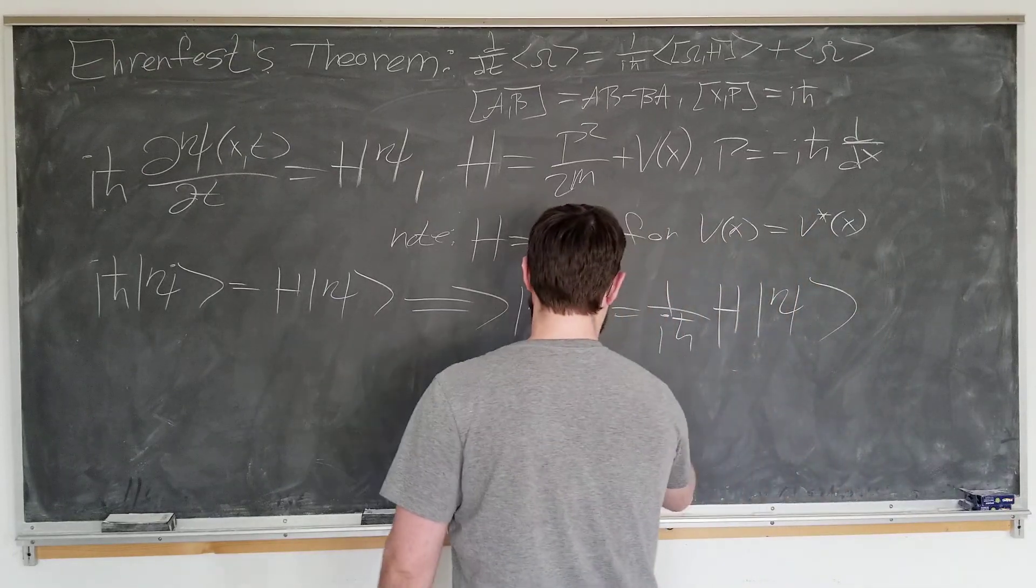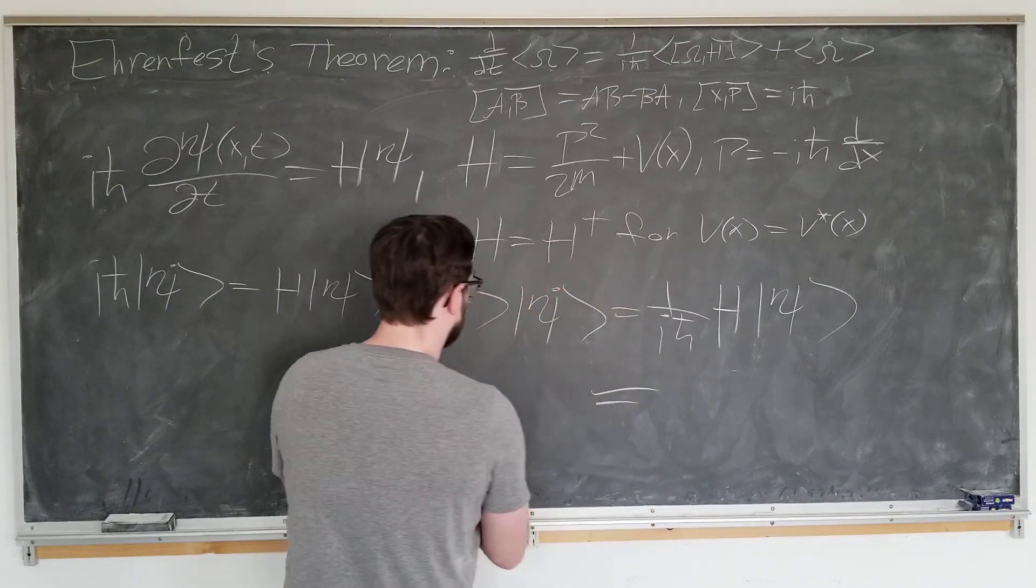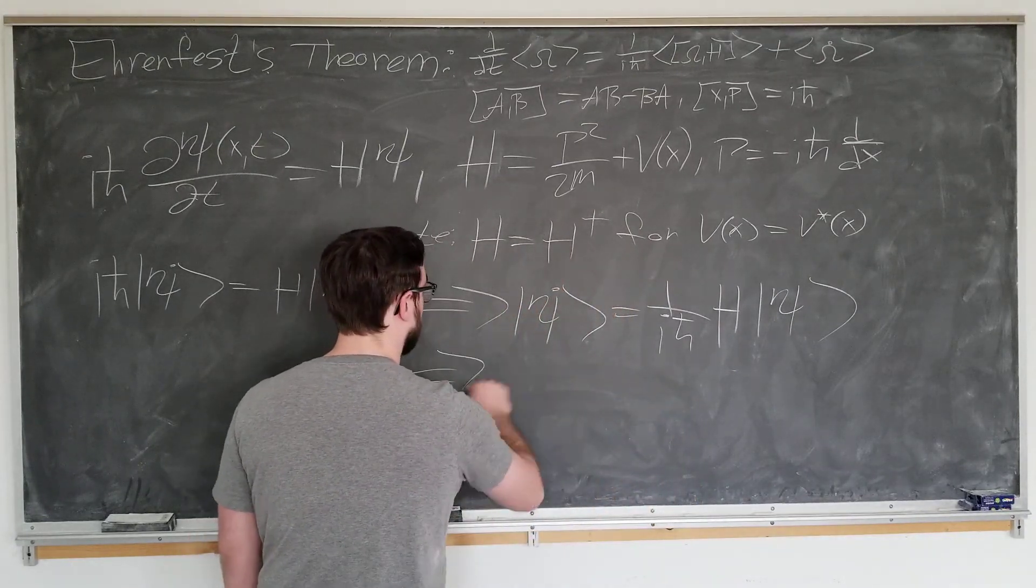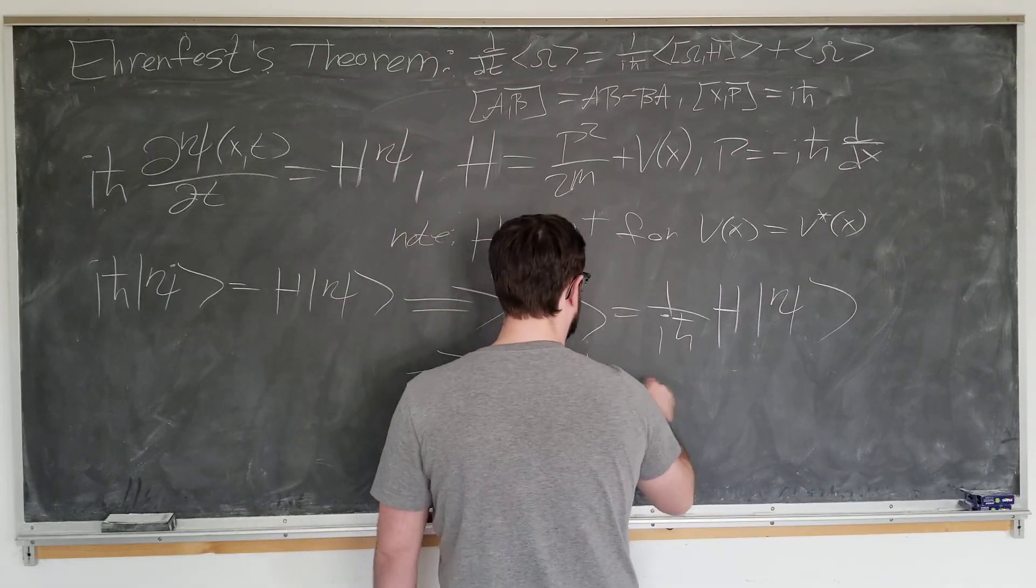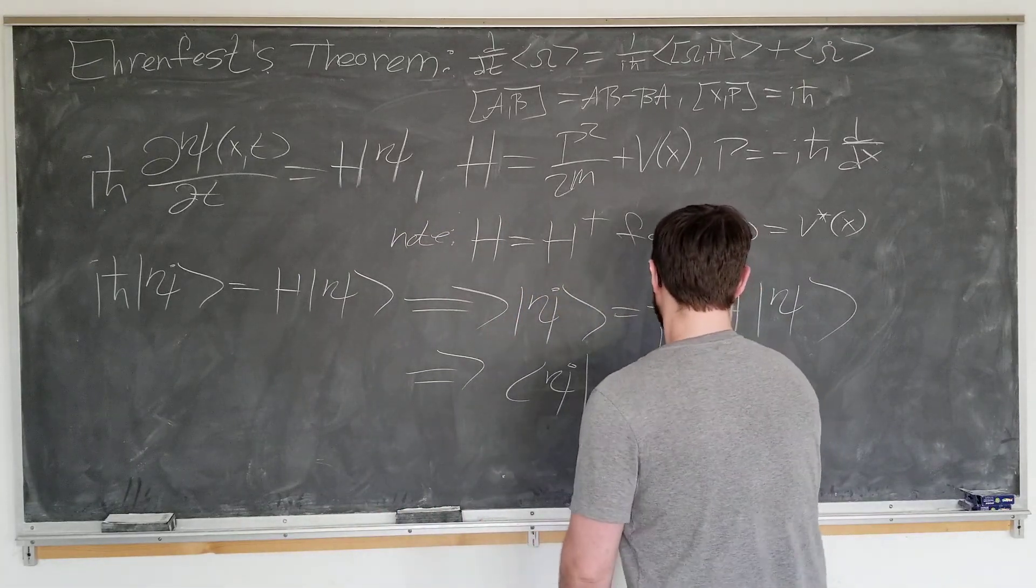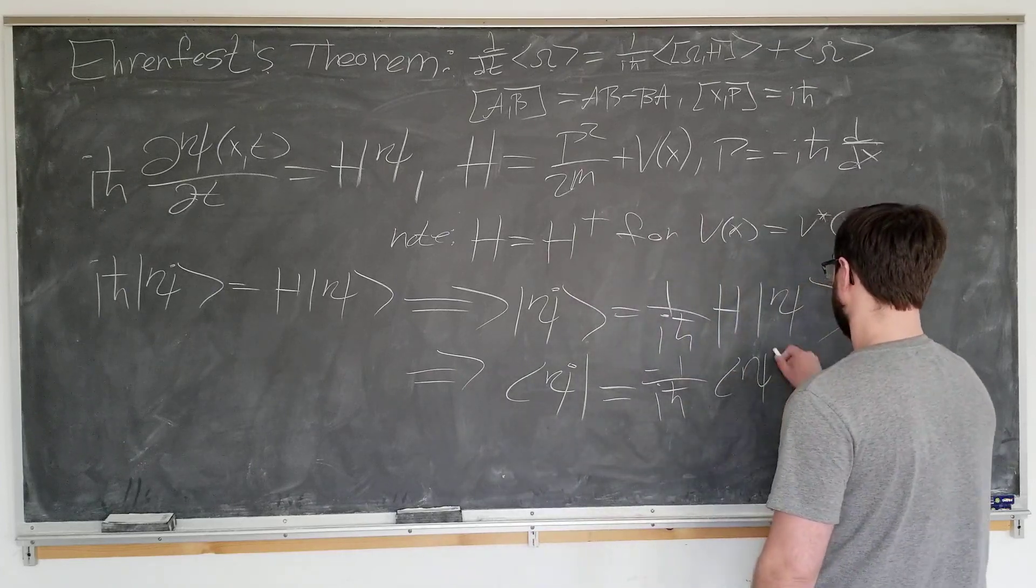We'll take the Hermitian conjugate of this equation, knowing that h is Hermitian, to get the bra version: minus one over i h bar psi h.